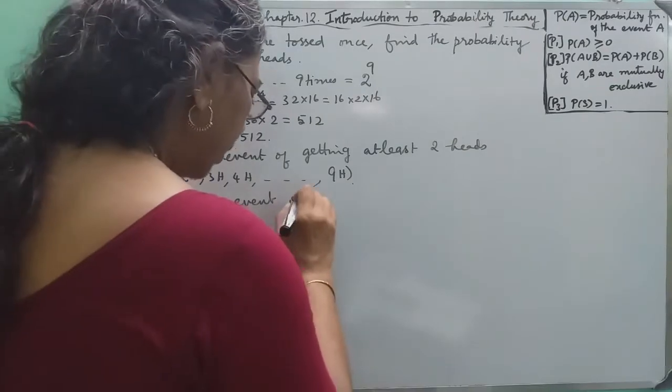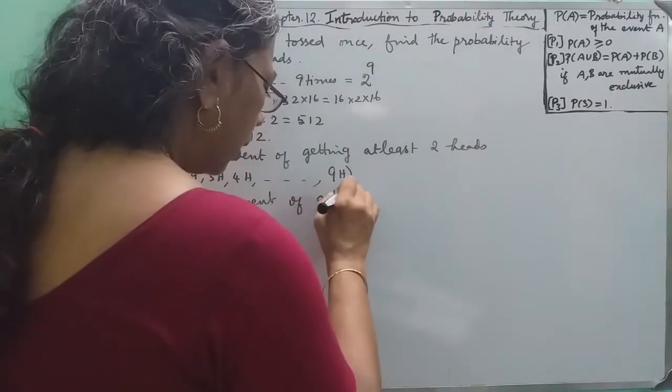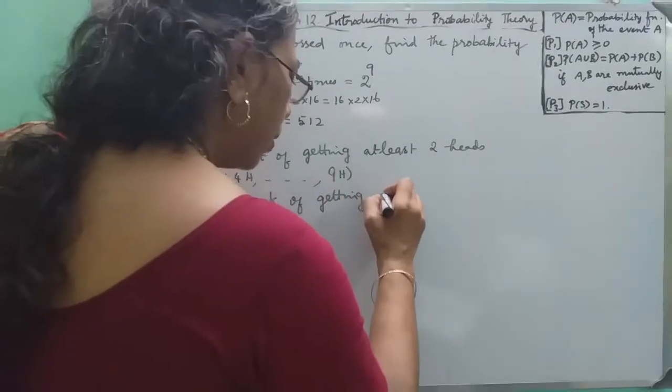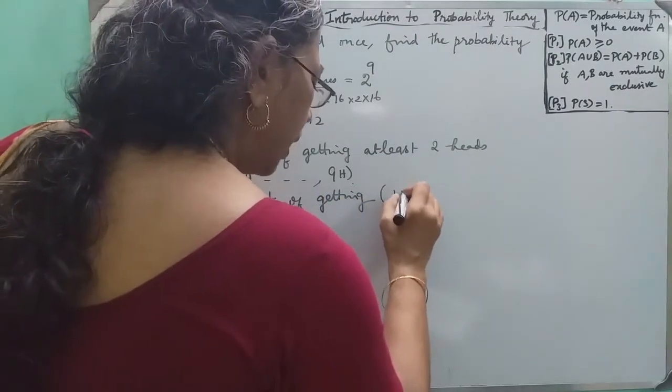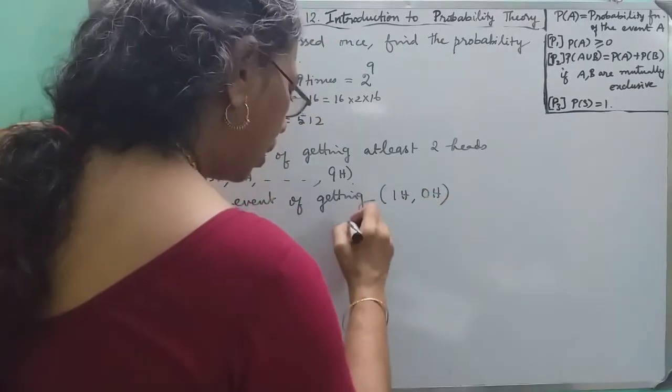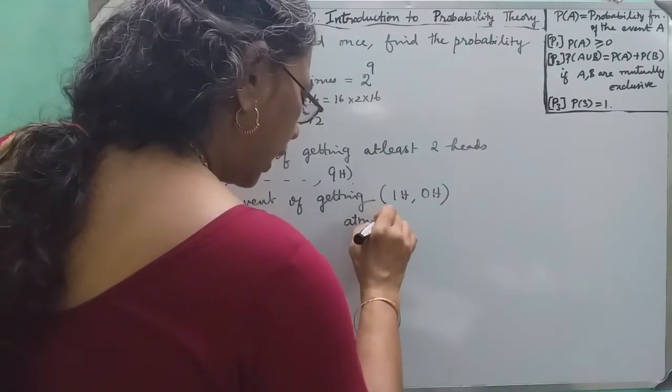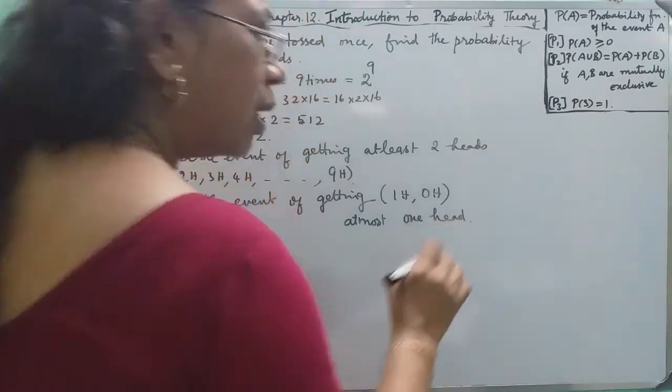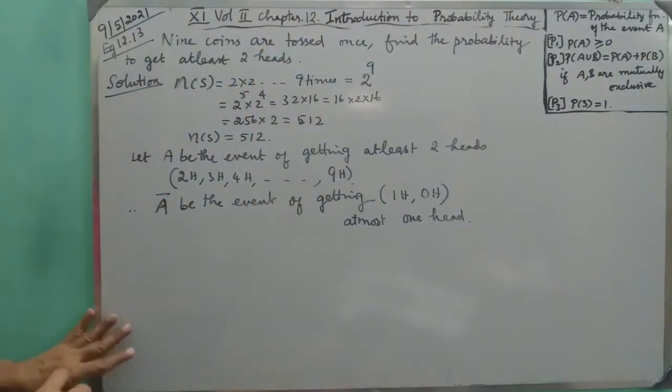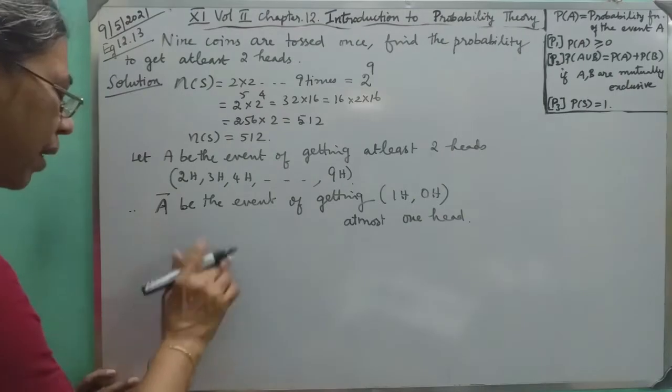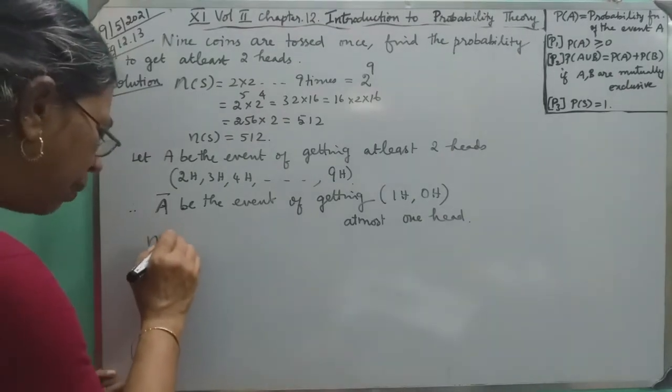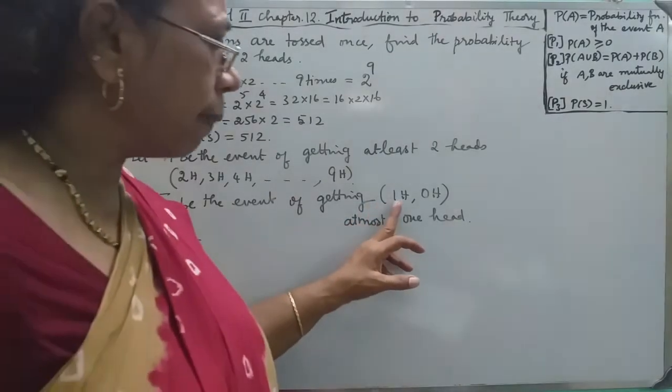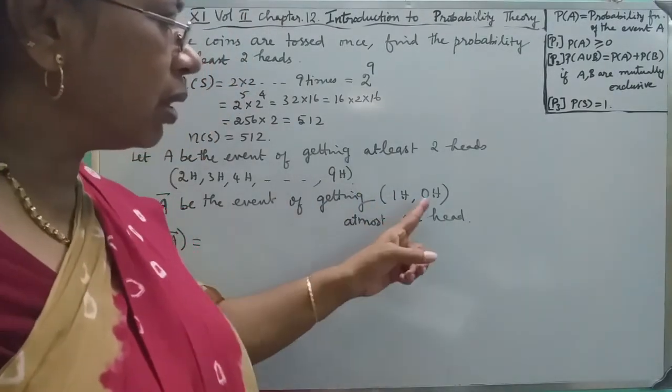For the complement A bar, this is one head and zero heads - at most one head. We need A bar: one head and zero heads.